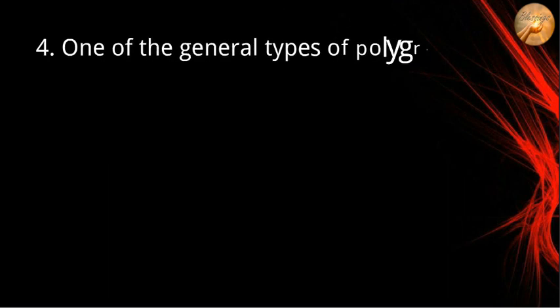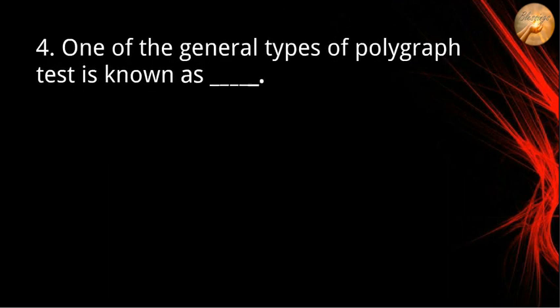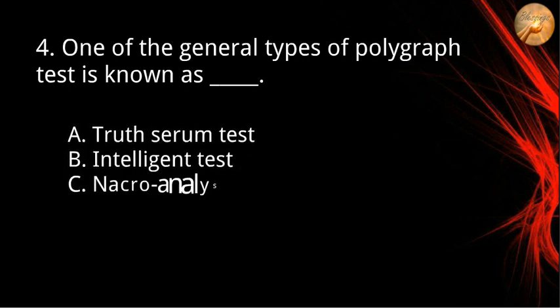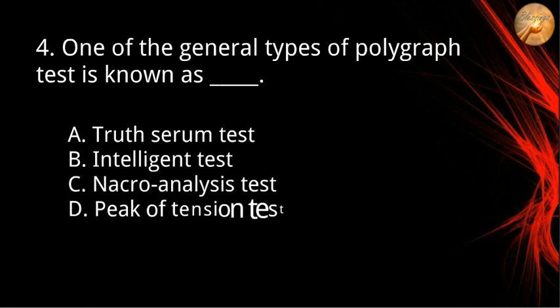Number four: one of the general types of polygraph tests is known as A) truth serum test, B) intelligent test, C) macroanalysis test, D) peak of tension test. The correct answer is letter D, peak of tension test.